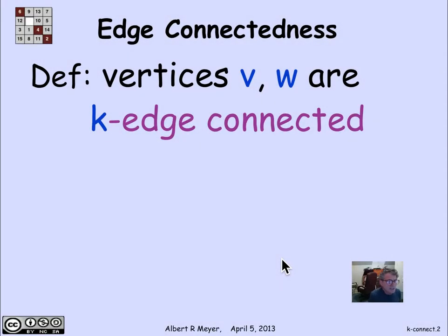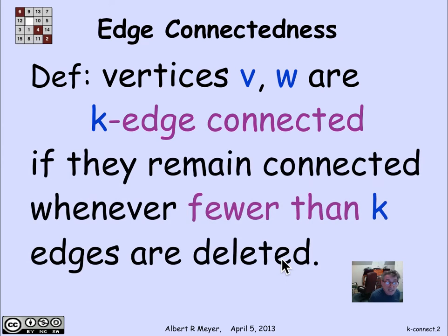Connectivity is more than just an all or nothing affair. We can talk about how connected a graph is. Let's begin with two vertices. Two vertices are said to be k-edge connected if they remain connected if you remove fewer than k edges from the graph.